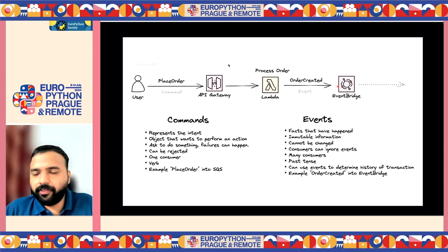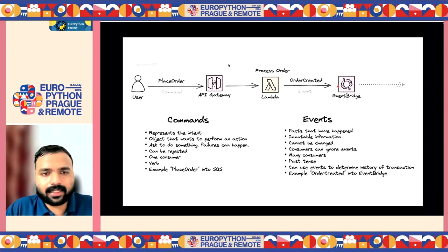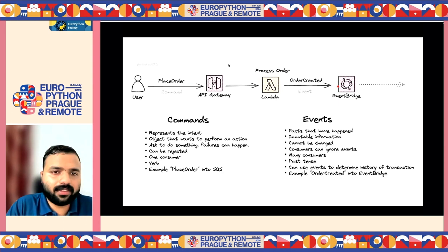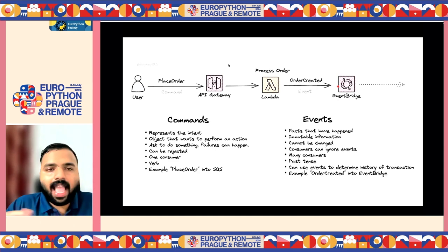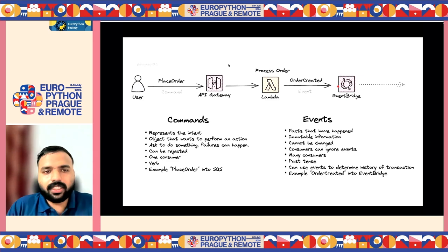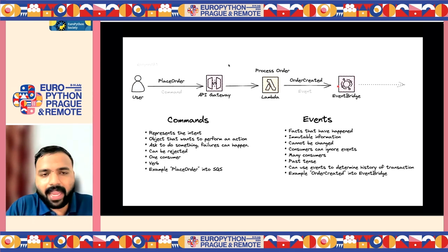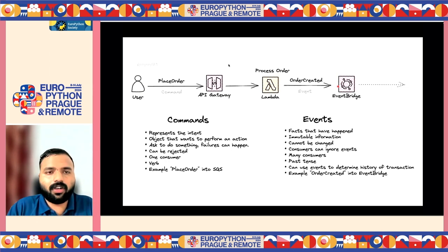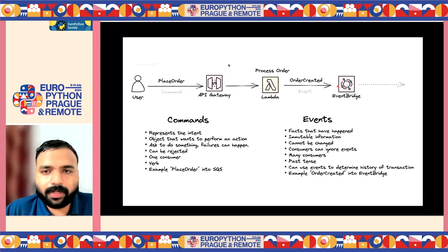We can select which events we want to consume — those are the consumers. We'll be building a notification service which consumes the Order Created event and notifies the user. If it's part of an enterprise tenant, the notification should also be sent to Slack. We may have multiple different consumers: one consumer for notifications, one consumer for logging to the audit log, and so on.